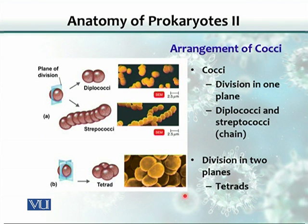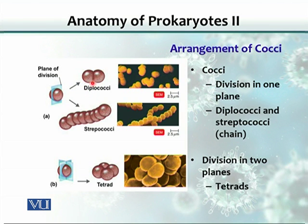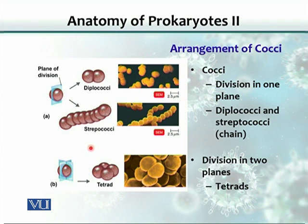Cells can also be arranged in different ways, and this arrangement is used for identification. Looking at cocci, the spherical group: if there is one plane of division and the two cells stay together, we call them diplococci — diplo meaning two. If after division they remain attached one after another, they form a chain called streptococci — strept meaning chain, so these spherical organisms are arranged in long chains.